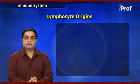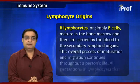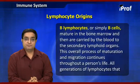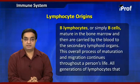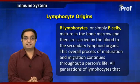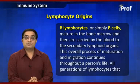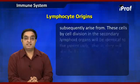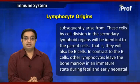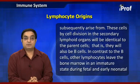B lymphocytes, or simply B cells, mature in the bone marrow and are then carried by the blood to the secondary lymphoid organs. This overall process of maturation and migration continues throughout a person's life. All generations of lymphocytes that subsequently arise from these cells by cell division in the secondary lymphoid organs will be identical to the parent cells.